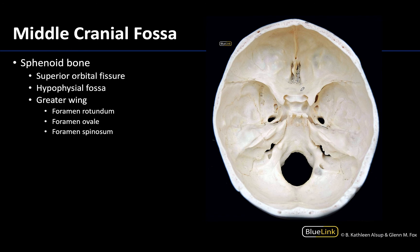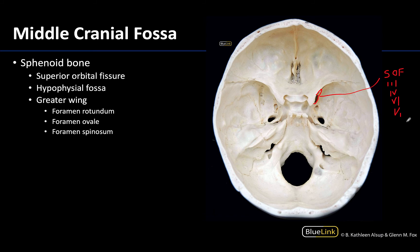Now let's move into the middle cranial fossa. Just under the lesser wings of the sphenoid — almost completely occluded from view — you can see a little peek of the superior orbital fissure, inferior to the lesser wings. We will see the superior orbital fissure in an anterior view in a few slides where it is quite visible. There is lots of neurovasculature heading towards or away from the orbit here: cranial nerves 3, 4, and 6 traverse this region, as well as V1, the ophthalmic nerve — one of the sensory divisions of the trigeminal nerve.